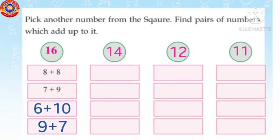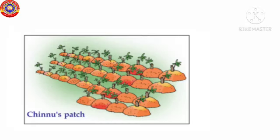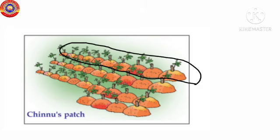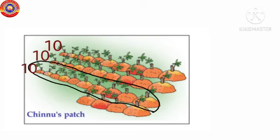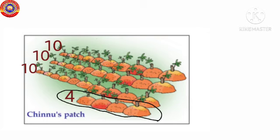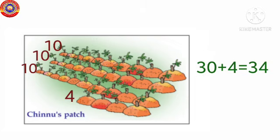Okay children, second activity: farming. Chinu and Minu both plant tapioca. Look here at Chinu's patch. In the first row Chinu planted 10 tapioca, second row 10, third row 10, last row only 4 plants. Total how many plants are there? Three rows means 10, 10, and 10, that is 30. Last row only 4, that is 30 plus 4 equals 34.